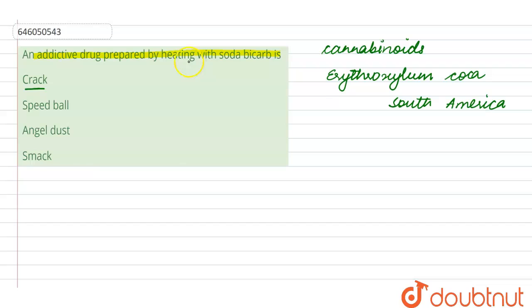We see that crack is the drug which is obtained by heating with sodium bicarbonate. Crack cocaine, or crack, is a crystal form of cocaine. It is prepared by heating cocaine with water.